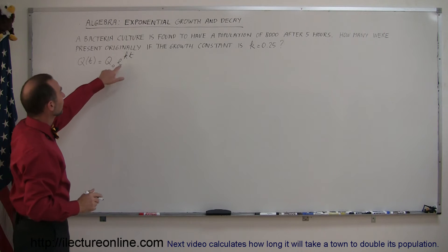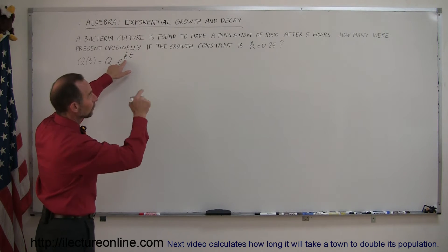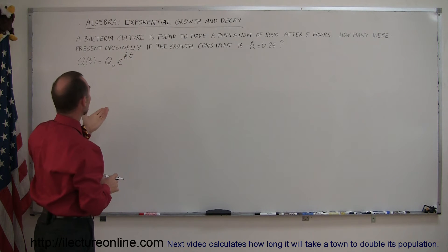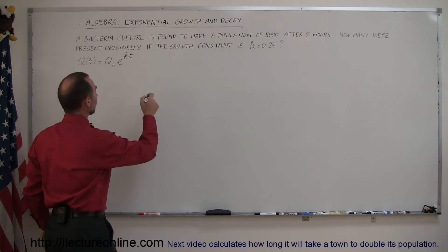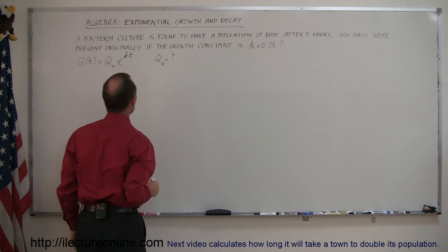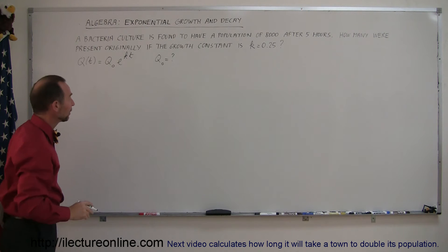Alright, we were given k, 0.25, we're given the time because after five hours there's now 8,000, so the question is how many were there originally? So what they're looking for is q initial is equal to question mark. We're looking for that and everything else should be given.